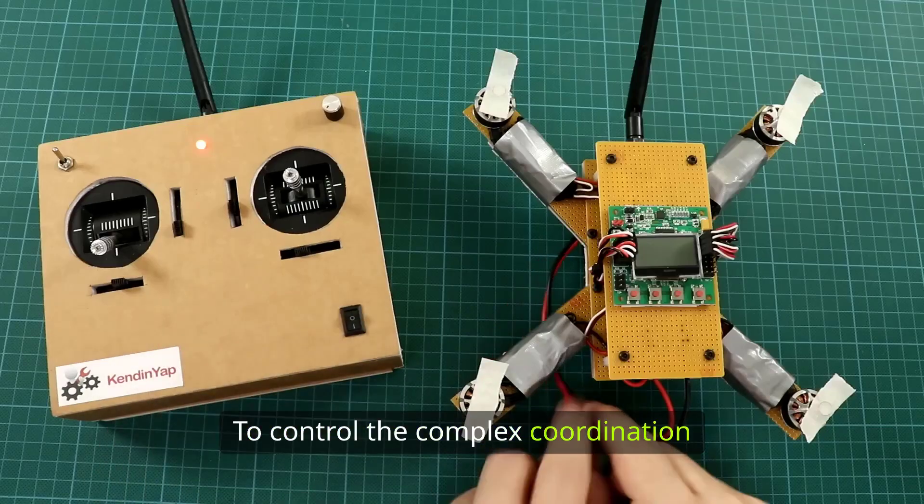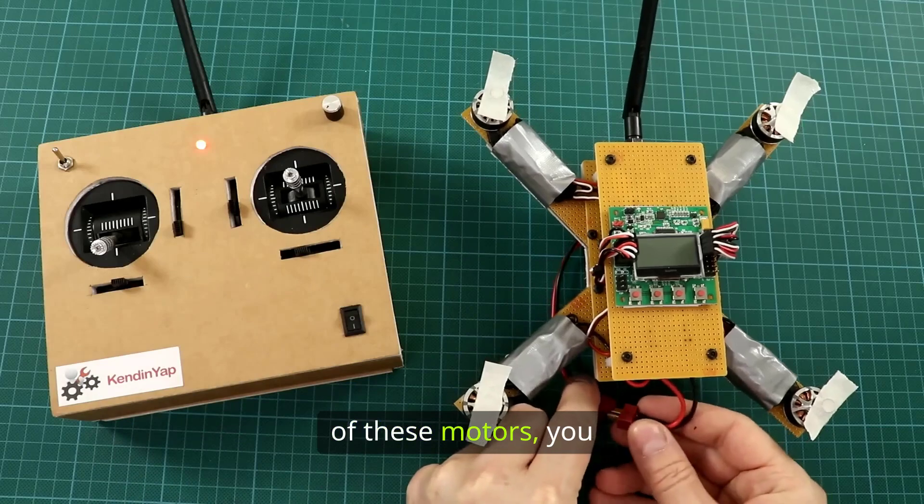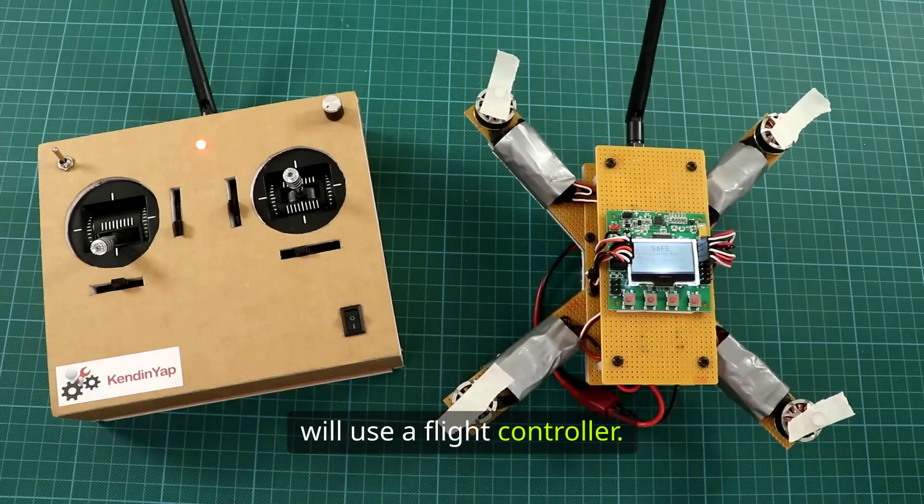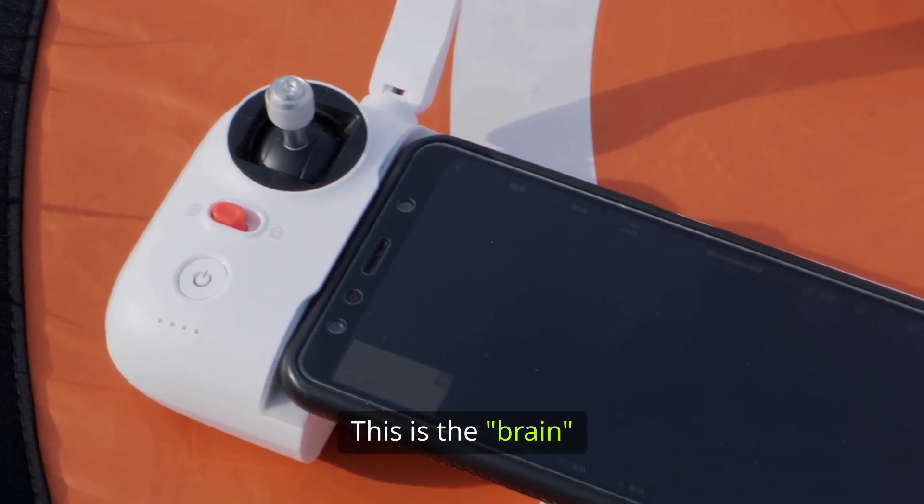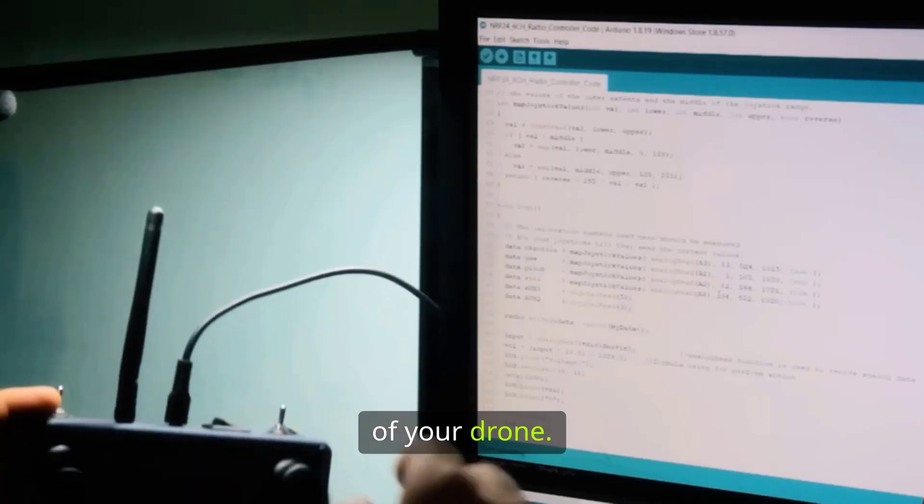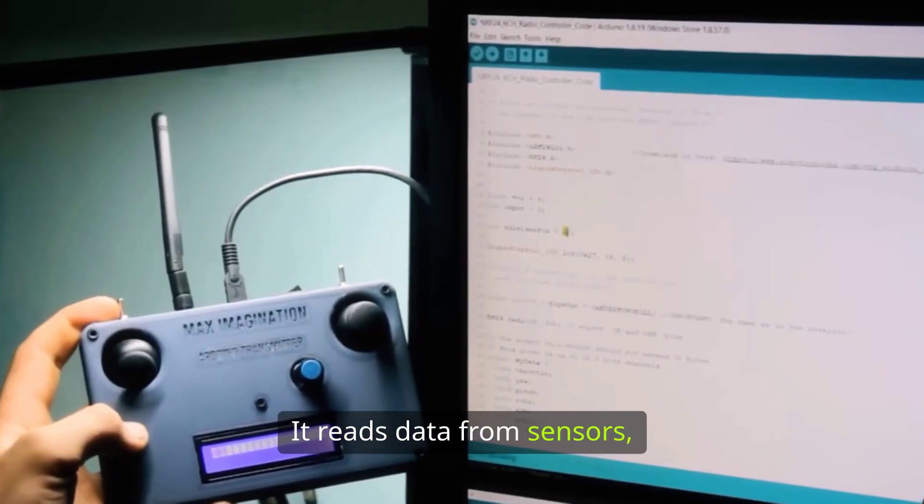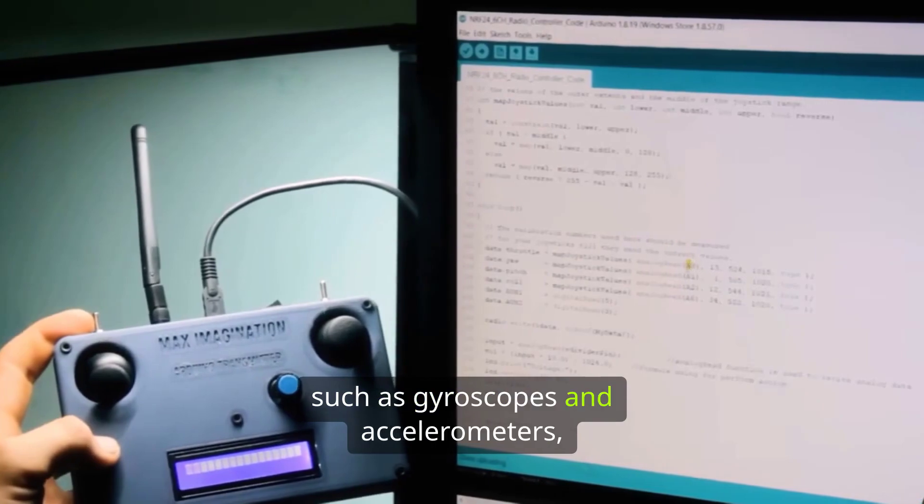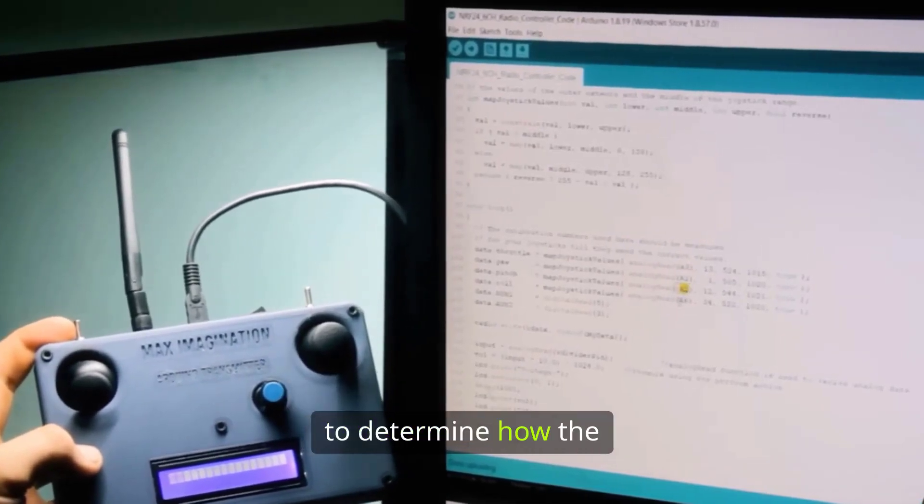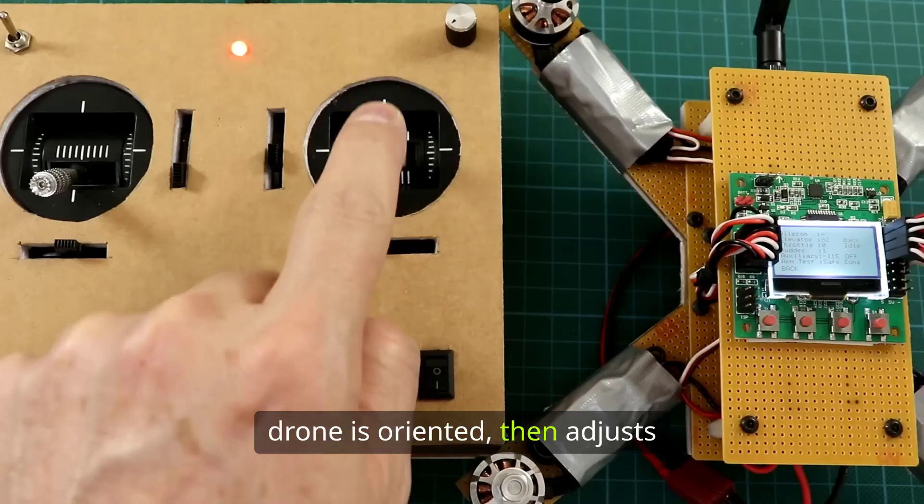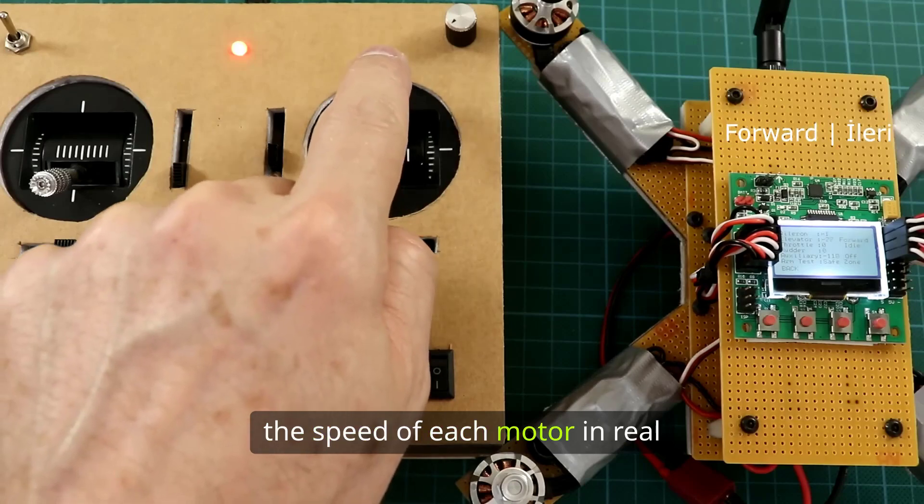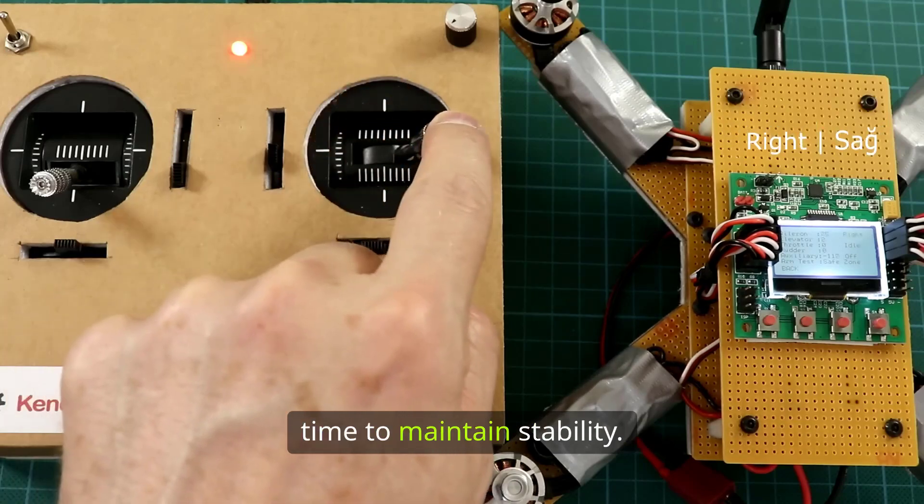To control the complex coordination of these motors, you will use a flight controller. This is the brain of your drone. It reads data from sensors, such as gyroscopes and accelerometers, to determine how the drone is oriented, then adjusts the speed of each motor in real time to maintain stability.